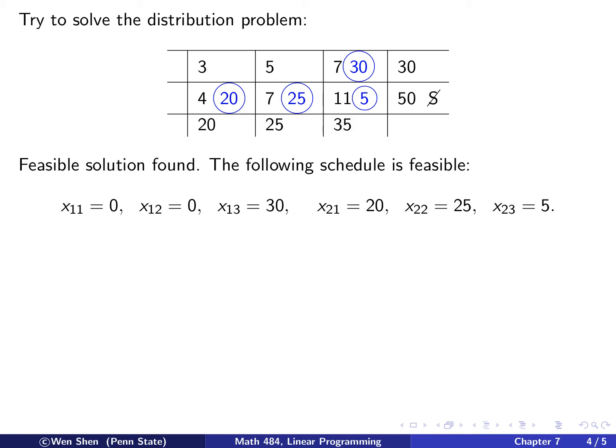A feasible solution is found, which means this following schedule is feasible. So x_11 is 0, there's no link. x_12 is 0. x_13 is 30. x_21 is 20. x_22 is 25. And x_23 is 5. So that schedule is feasible.